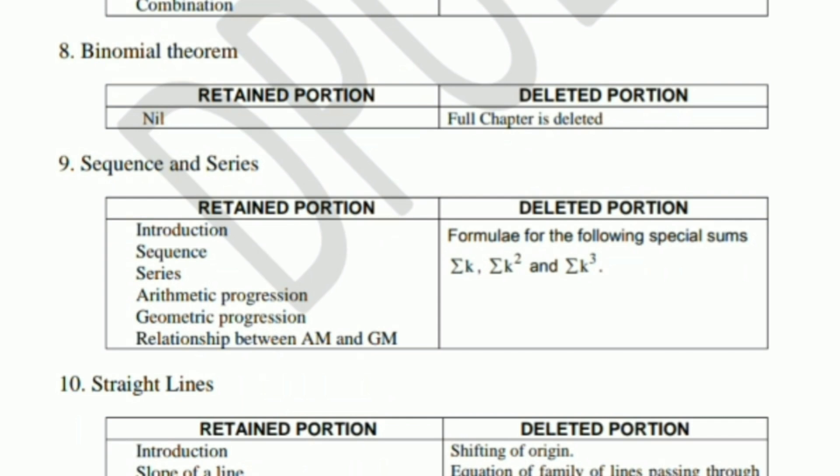This is the binomial theorem. Next, sequence and series — the last concept of special sum is deleted in total. The summation of k, k², k³, and 1 — this is deleted in sequence and series.